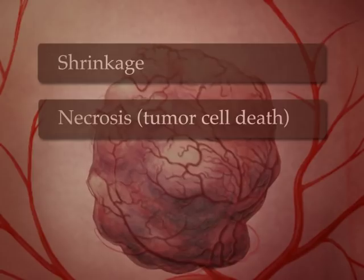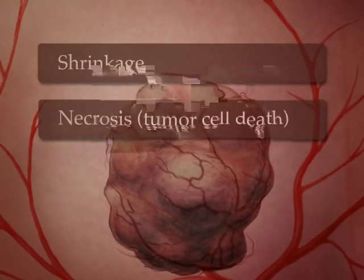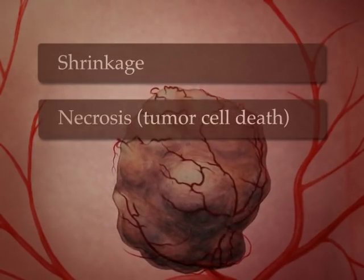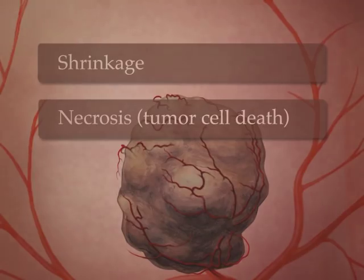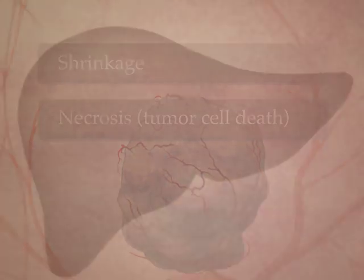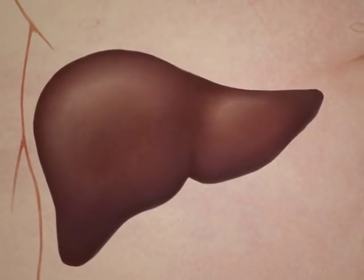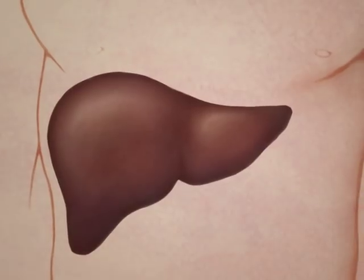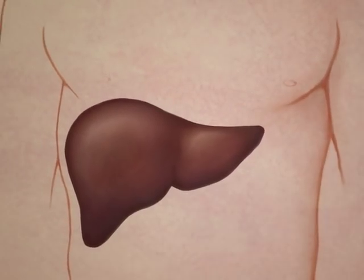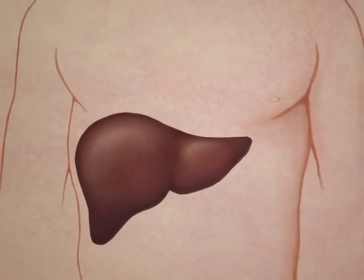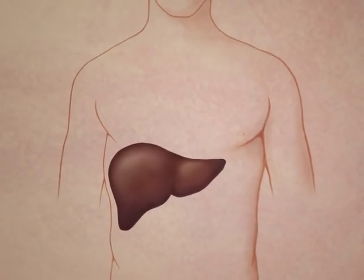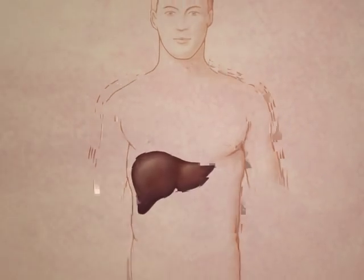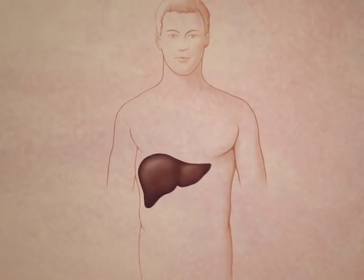Shrinkage and necrosis, or tumor cell death, is seen on the follow-up MRI 4 to 6 weeks later. Because these chemotherapy particles are applied only to the tumor site, healthy tissue remains unaffected. The patient also has fewer side effects compared to regular chemotherapy.